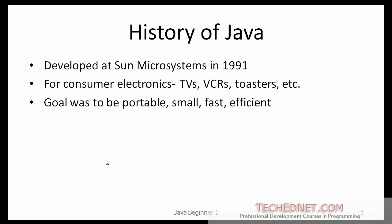Looking at the history of Java, it has been around for a while. Originally developed at Sun Microsystems in 1991, they wanted to develop a programming language for small devices like TVs, VCRs, toasters, ovens, etc. Their goal was to make a portable, small programming language. Originally, the language was known as Oak. It was released as Java in 1995.